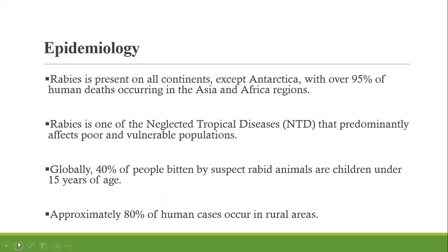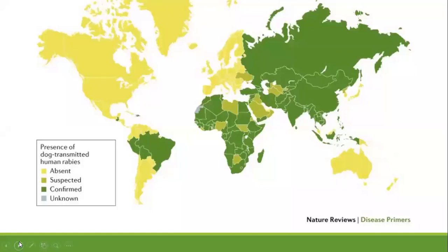In terms of spread, rabies is mostly found in Asia and Africa, with very few cases reported in Antarctica. It is a neglected tropical disease commonly found in the developing world. The population most affected is children under the age of 15, and rural areas bear the burden more than urban settings. As you can see on this world map, Asia and Africa are significantly affected, with some patches in South America and very minimal cases in Europe and the Americas.